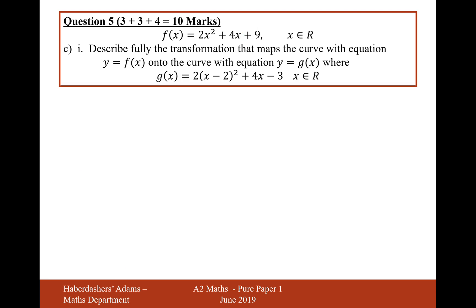Let's now move on to part C. C i, it says describe fully the transformation that maps the curve with equation y equals f of x. Let's just write out f of x again. It was 2 brackets x plus 1 squared plus 7, onto the curve where we have 2 brackets x minus 2 squared plus 4x minus 3. Okay, well there's not really much we can do with that apart from just expand all the brackets and then put it back into completed square form.